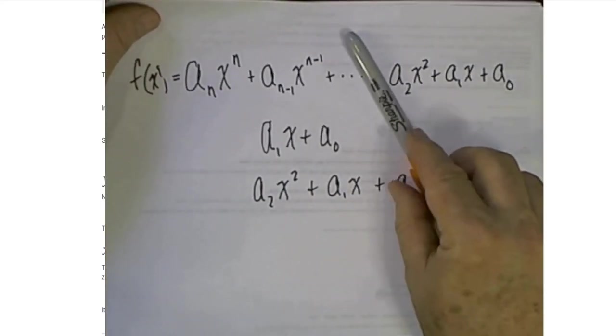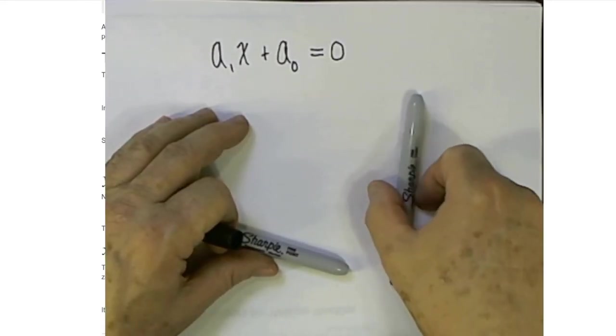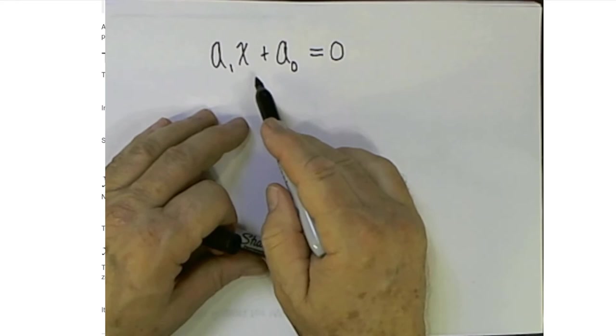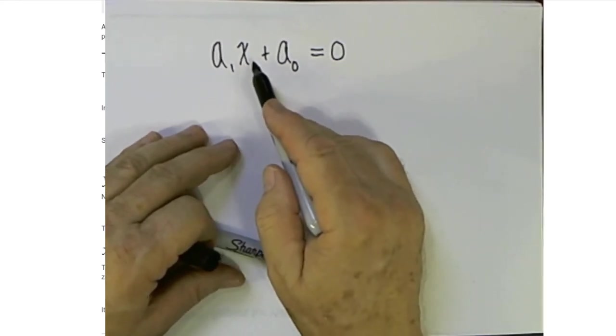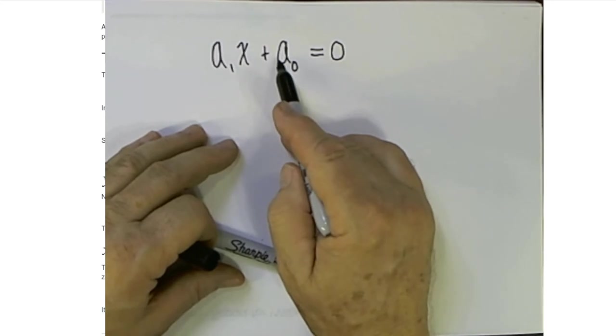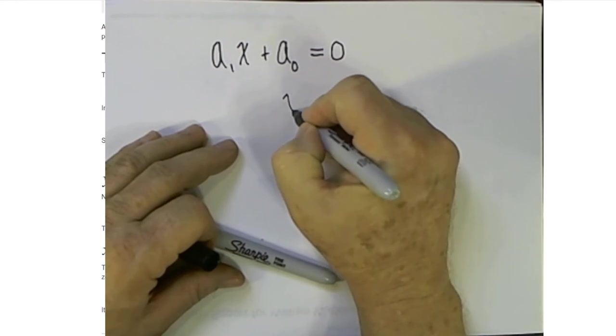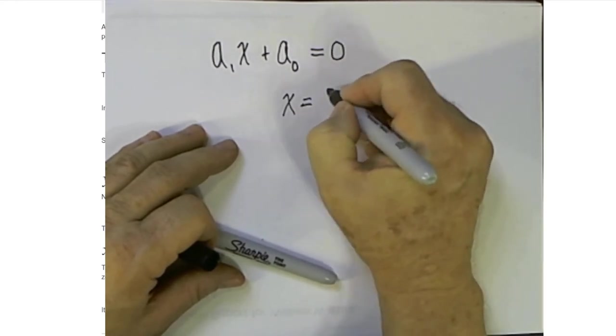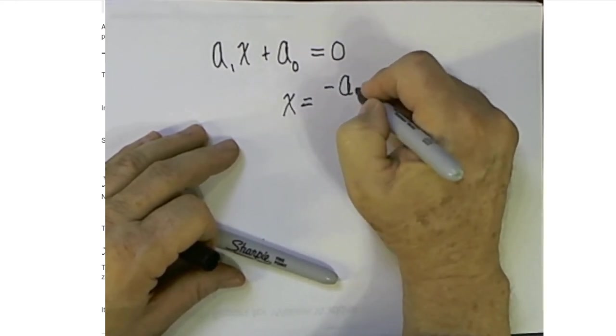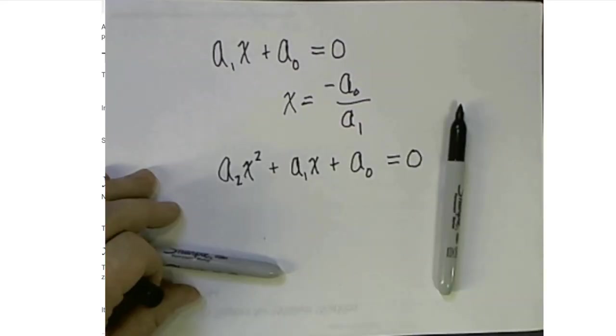On the other hand, the x-intercept occurs when the y value is zero. So if we wanted to find the x value of the x-intercept, it would be simply a matter of solving this equation. We could subtract the constant term from each side and then divide by the slope. That would mean that x would be equal to -a₀ divided by a₁.